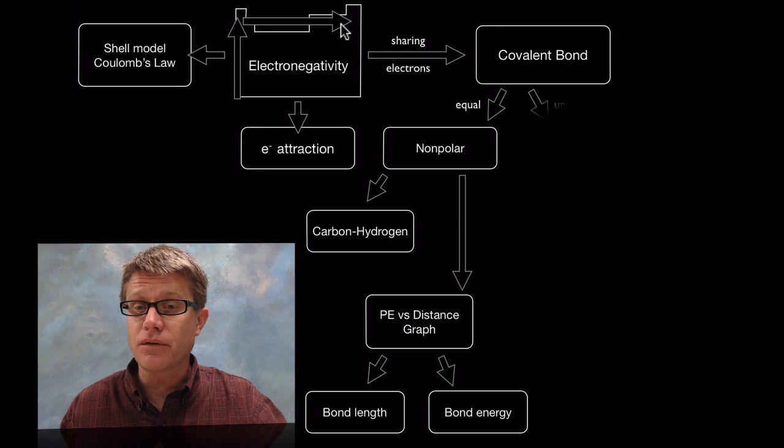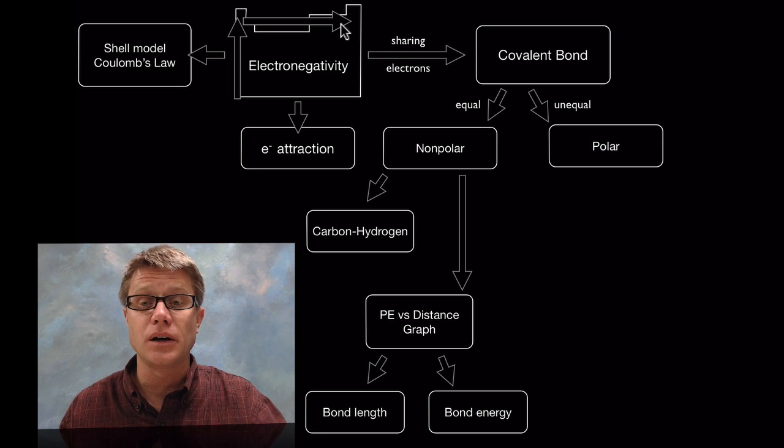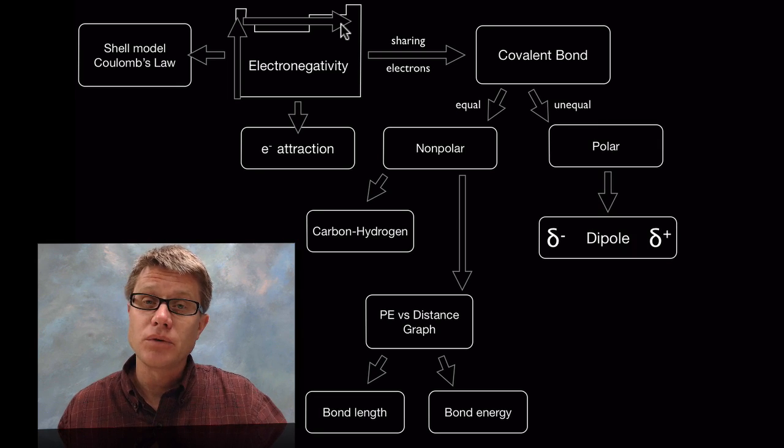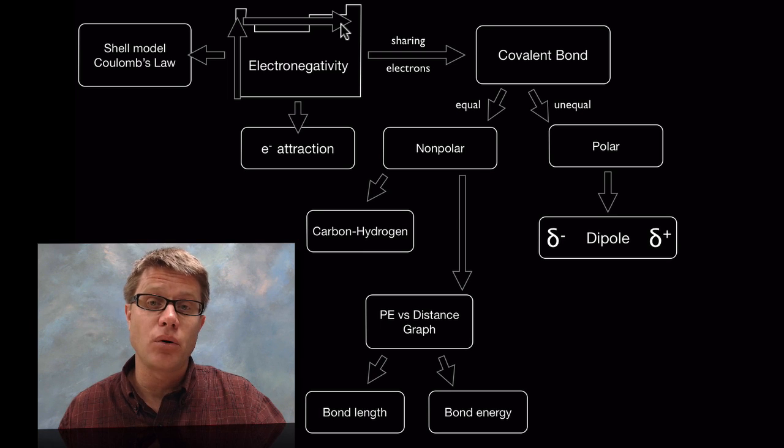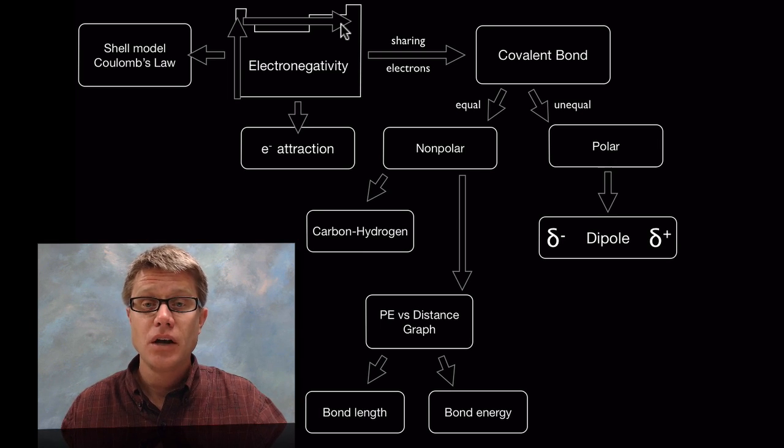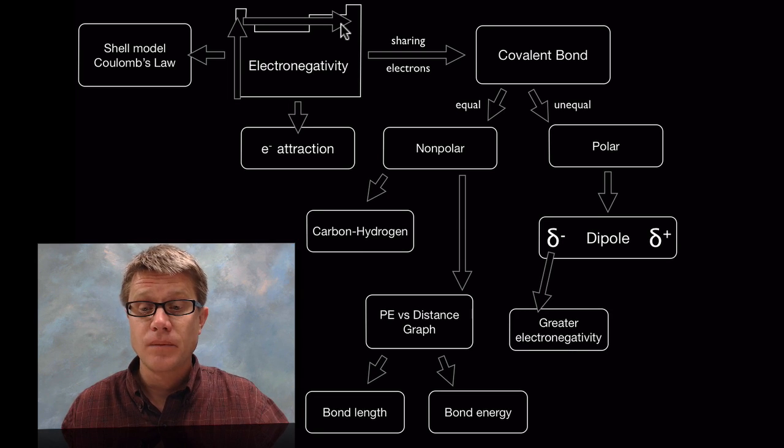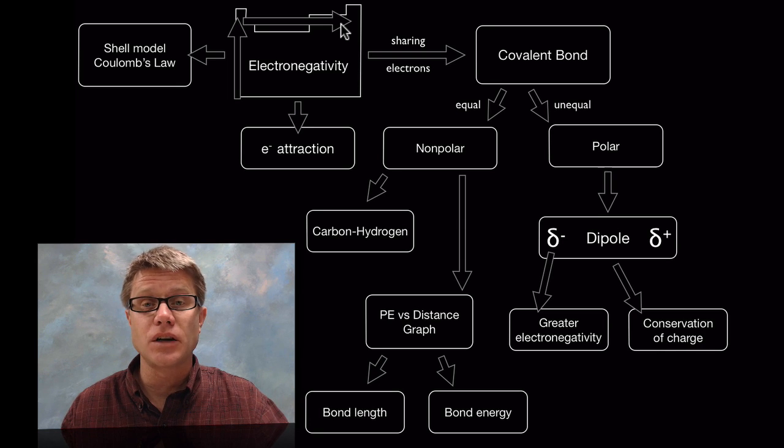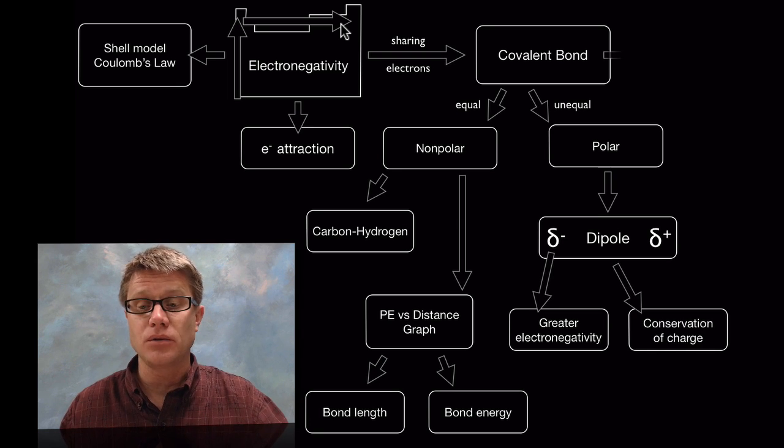Now if the electronegativity is different then we call that a polar covalent bond. When we do that we have something called a dipole where there's a partial positive and a partial negative charge. Whichever one has the highest electronegativity is going to have that negative charge. But even though we may have differences in charge, we still have conservation of charge over that whole molecule itself.